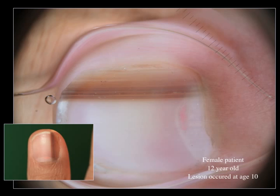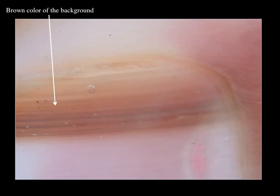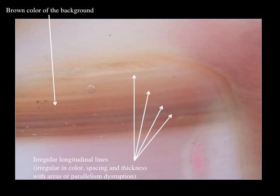This is a close-up of dermoscopy. The background is brown, which indicates a prominent melanocytic hyperplasia in the nail matrix. The longitudinal lines are irregular in color, spacing, and thickness, and there are areas of parallelism disruption. This is the pattern observed in melanoma — yet the patient is only 12 years old.